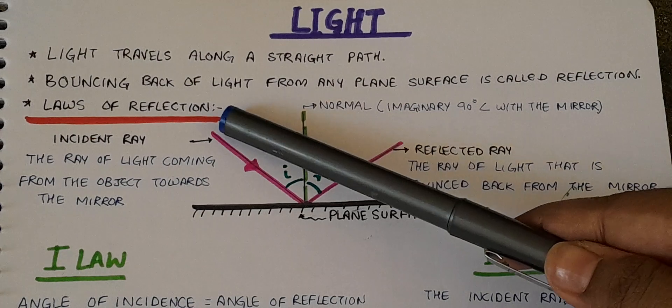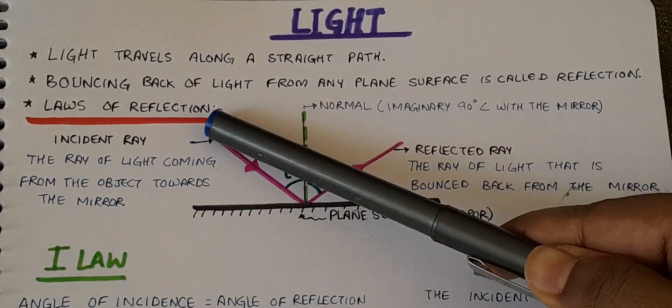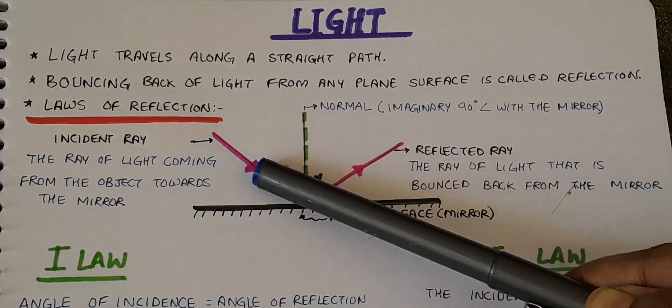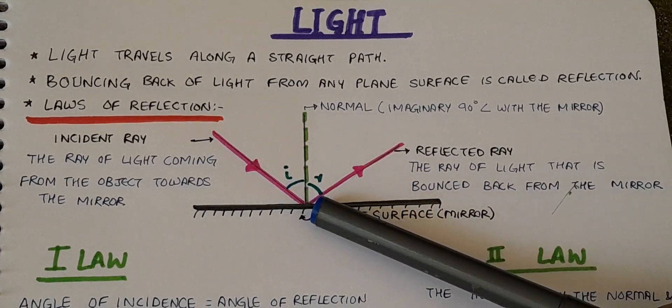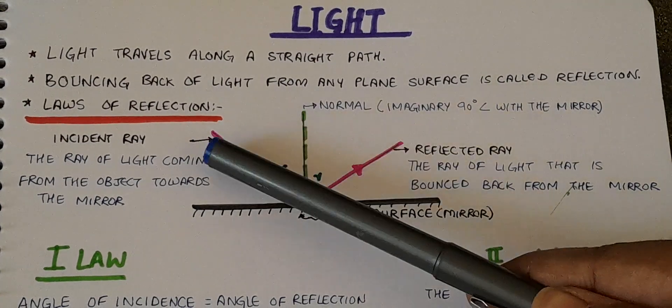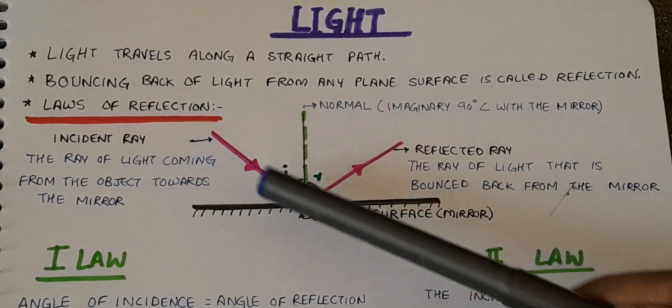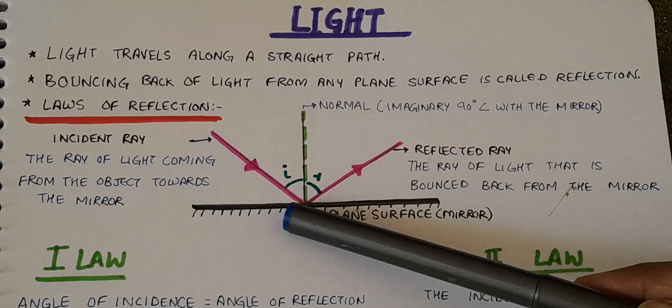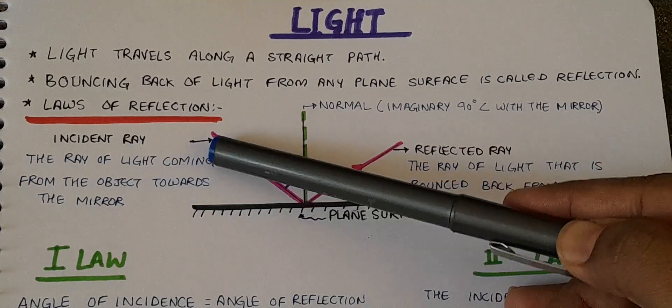When there is an object in front of the mirror, for example, our object is here. Light rays will come from the object. The light ray coming from the object towards the mirror, we call incident ray. For example, this ray.